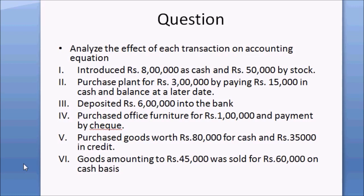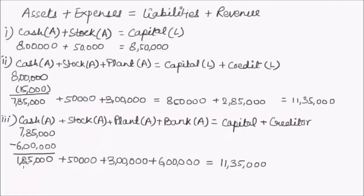The fourth transaction states: purchased office furniture of rupees 1 lakh and the payment is done by cheque. The two accounts involved are the furniture account and the bank account, since furniture has been purchased using a cheque, so the amount is paid by bank.